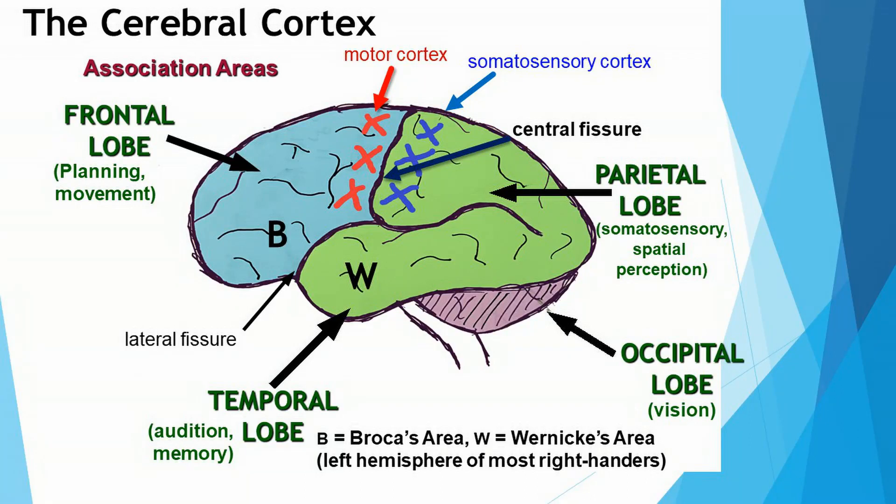Once again, we're looking at a diagram of the human brain, the outer covering called the cerebral cortex. The frontal lobe is at the front of the brain, located in front of the central fissure, and it's responsible for planning and movement. I've drawn some little red X's in the frontal lobe representing the movement part of the frontal lobe's responsibilities, but we're going to come back to that in a moment. First, I want to introduce you to the other lobes of the human brain.